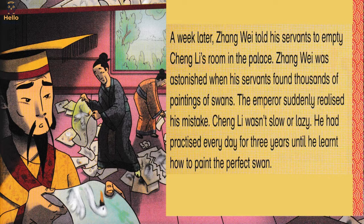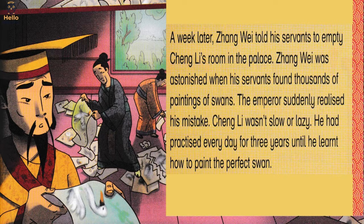Zhang Wei was astonished when his servants found thousands of paintings of swans. The emperor suddenly realized his mistake. Cheng Li wasn't slow or lazy — he had practiced every day for three years until he learned how to paint the perfect swan.